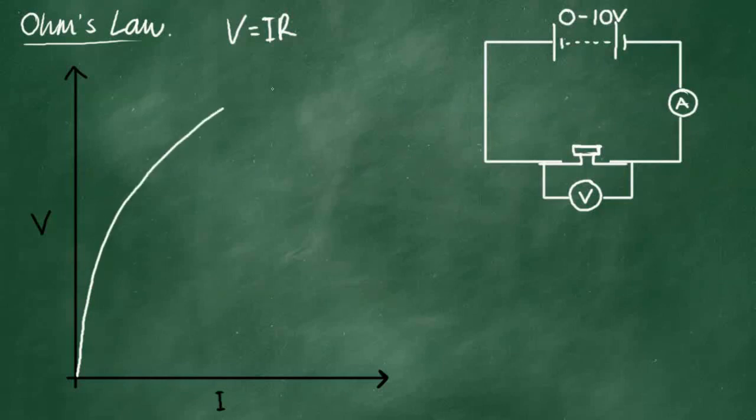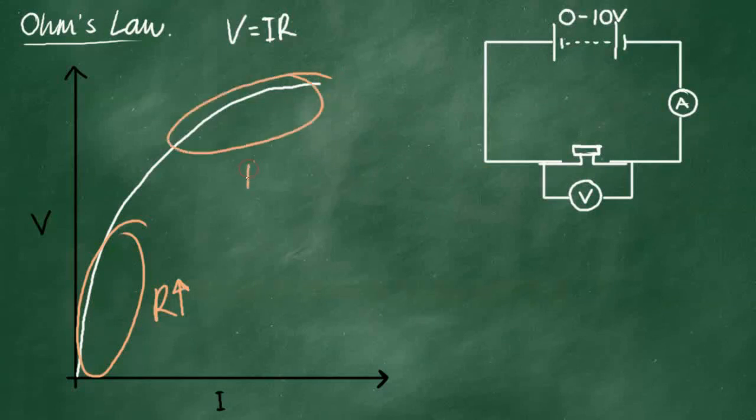But as it heats up, it gets a lower resistance, and actually you get a larger increase in current for a smaller increase in potential difference. Again, think about the gradient of the graph. Down here, we have a large gradient, therefore a large resistance. And here, we have a low gradient, therefore a low resistance.